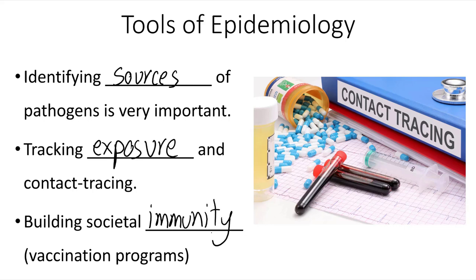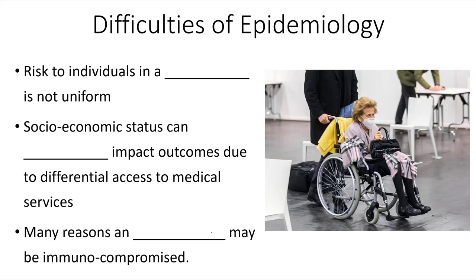Some of the challenges and difficulties of epidemiology is that risks to individuals in a population are not uniform. As we saw with COVID-19, those who were oldest were some of the most impacted, and individuals with lower socioeconomic status can have negative impacts disproportionately higher than those at a higher socioeconomic status, due to differential access to medical services and treatments.